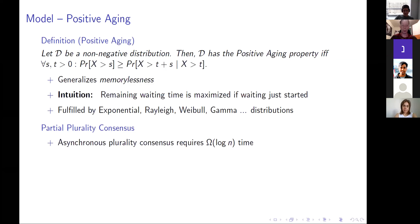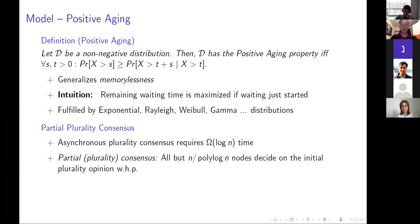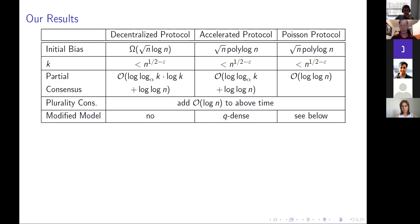We define partial plurality consensus, allowing a polylog(n) fraction of nodes to not have reached consensus yet, since solving asynchronous plurality consensus in less than log n time is impossible. We have three protocols all requiring an initial bias of roughly sqrt(n log n) and supporting up to roughly sqrt(n) different colors. The partial consensus time matches the synchronous state-of-the-art results, the second protocol shaves off a log K factor, and the third achieves an optimal log log n result. Full consensus requires an additional O(log n) time steps.